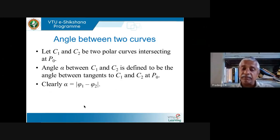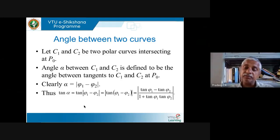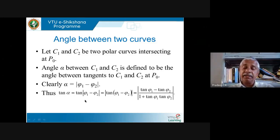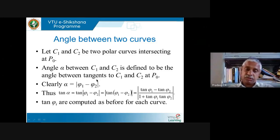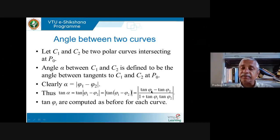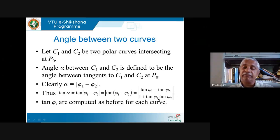For polar curves, the required angle α between the two tangents is |φ1 − φ2|. So tan α = |tan(φ1 − φ2)|, which by the standard formula is |tan φ1 − tan φ2| / |1 + tan φ1 · tan φ2|. Remember: tan is positive in both the first and third quadrant. So if I want to find α, I find tan φ1 and tan φ2, which is what we have been doing all this time — finding the angle between the radius vector and the tangent for each curve.